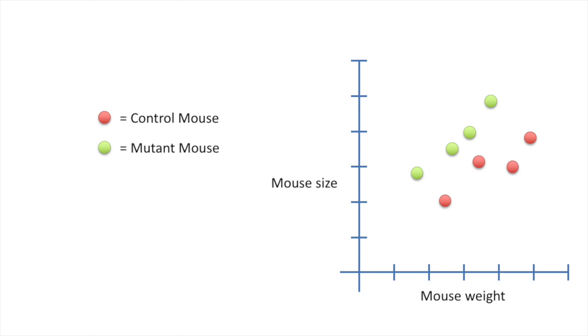In the original StatQuest, we were interested in determining if there was a statistically significant difference between the size of control mice versus the size of mutant mice, given that we had measured their weights. And we ended up with this equation: y equals the control intercept plus a mutant offset plus the slope. This equation fits two lines to the data, one for the control mice and one for the mutant mice.